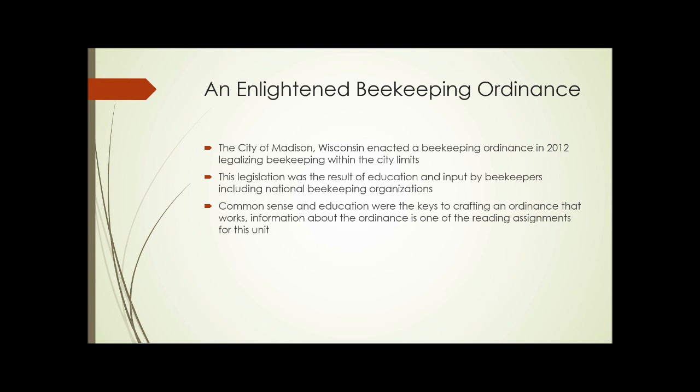So how do we combat this? Here's an example: the city of Madison, Wisconsin enacted a beekeeping ordinance in 2012, legalizing beekeeping within the city limits. The legislation was the result of education and input by beekeepers, including national beekeeping organizations. Common sense and education were the keys to crafting an ordinance that works, and information about that ordinance is one of the reading assignments for this unit. It's a pretty good ordinance, and one that could potentially be used as a model in other locations.